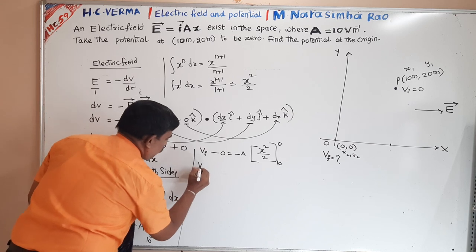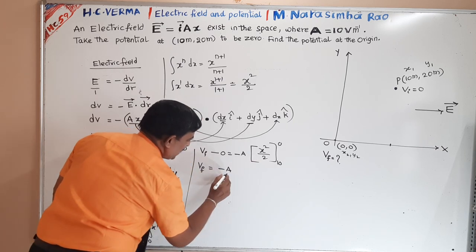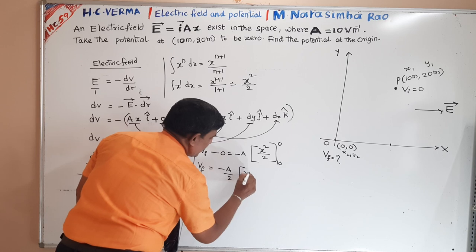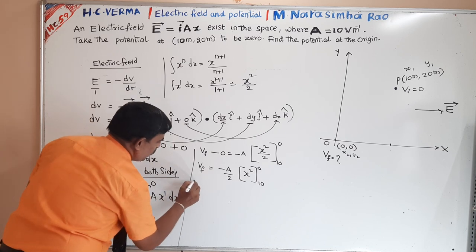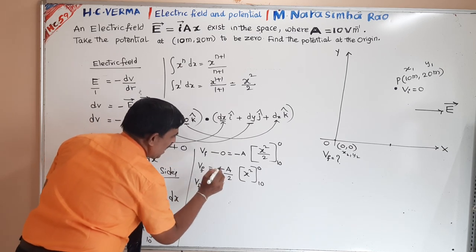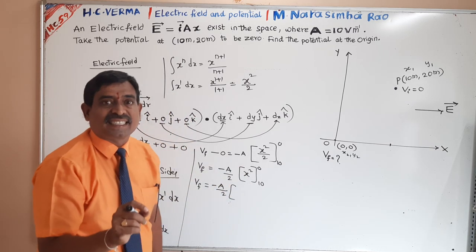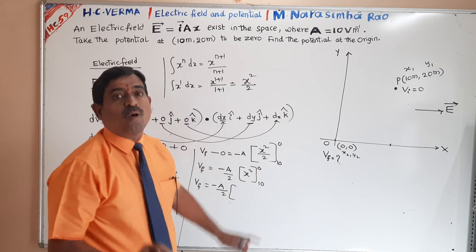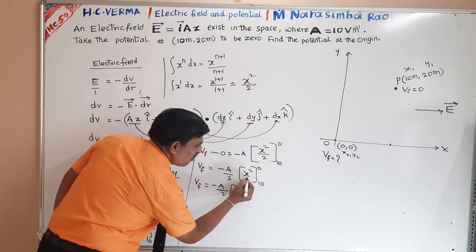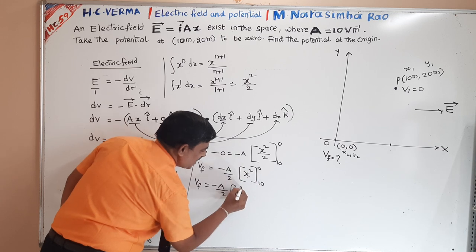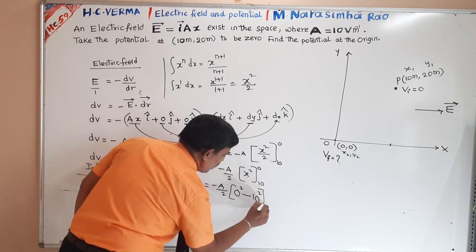So the final potential equals minus A by 2 times (x²) evaluated from 10 to 0. Substituting the upper limit 0 and lower limit 10: final potential equals minus A by 2 times (0² minus 10²).